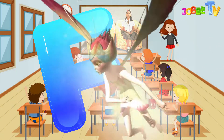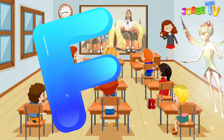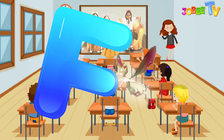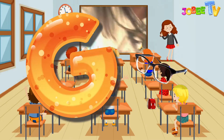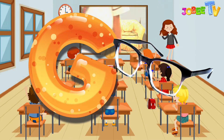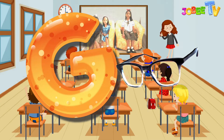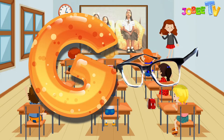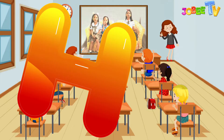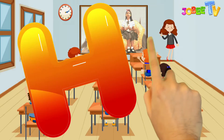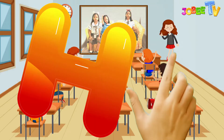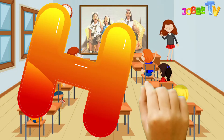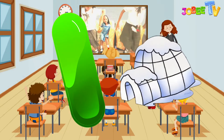F is for fairy, F-fairy, F-fairy. G is for glasses, G-G-glasses, G-G-glasses, G-glasses. H is for hand, H-H-hand, H-H-hand, H-hand. I is for igloo.